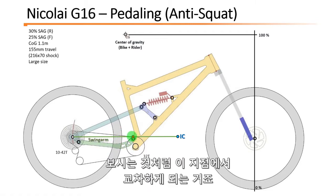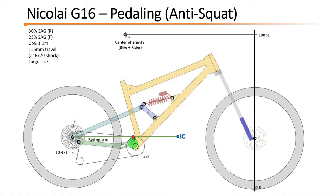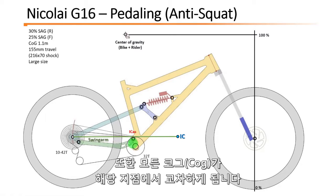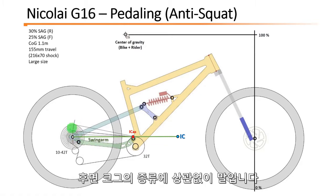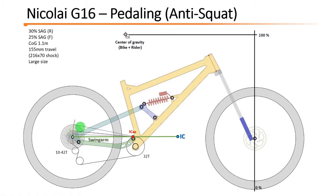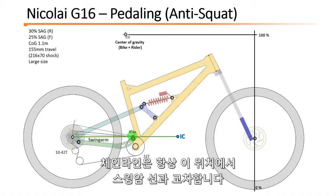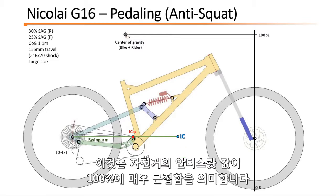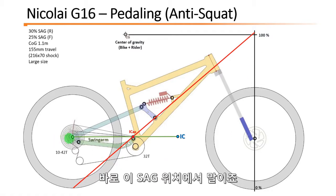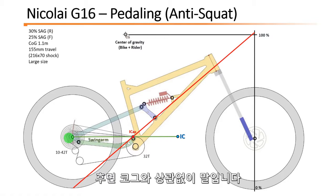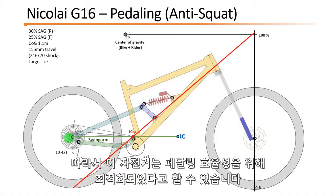As you can see it crosses at that point here, and it crosses at that point for every cog — independently of the cog that you are using, the chain line will always cross the swing arm line at that position. So this means that the anti-squat of this bike will be very close to 100% at the sag position, independently of the rear cog. The bike is very well optimized for pedaling efficiency.